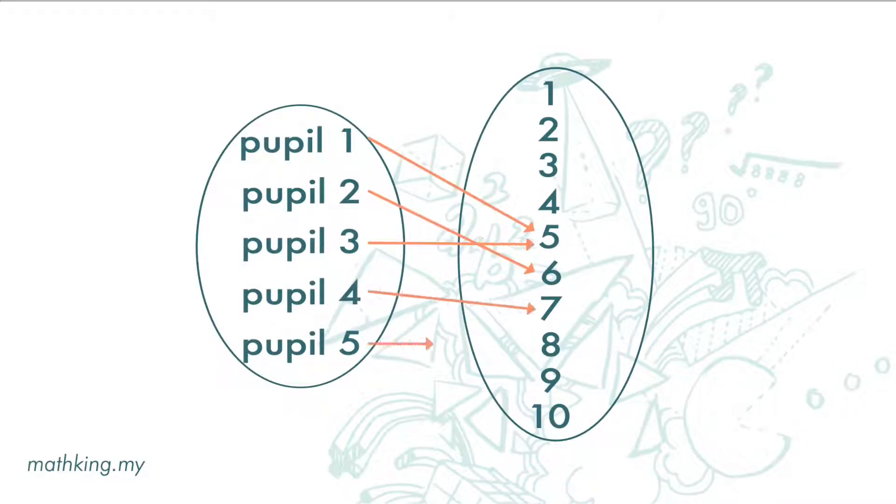This arrow diagram shows the marks obtained by students. Set A is all the students in the class. We call this domain. Set B are the possible marks of a test. We call this codomain.